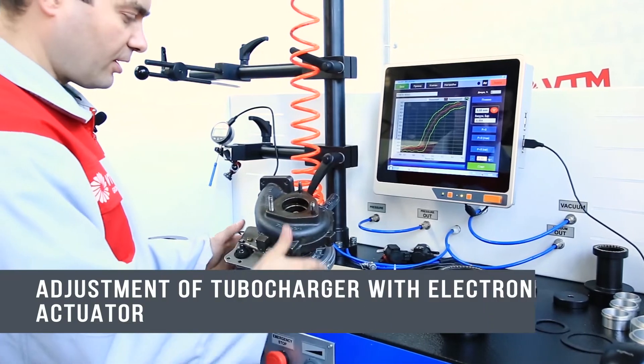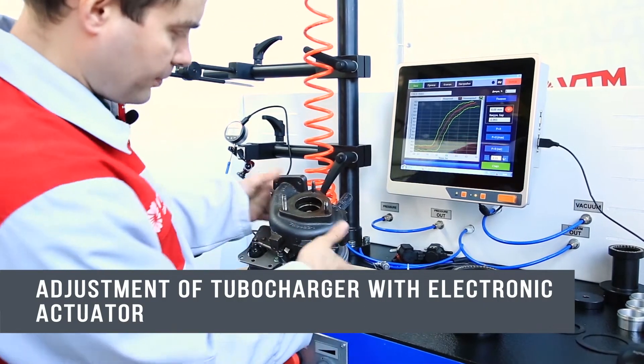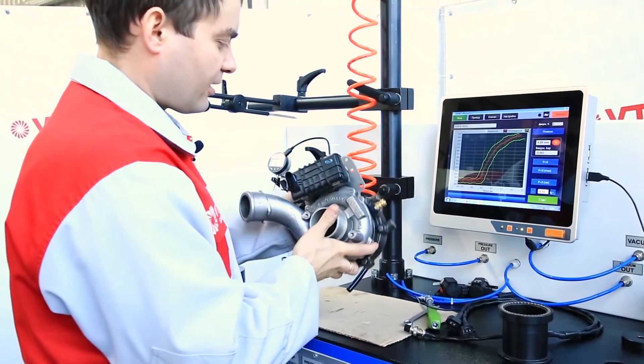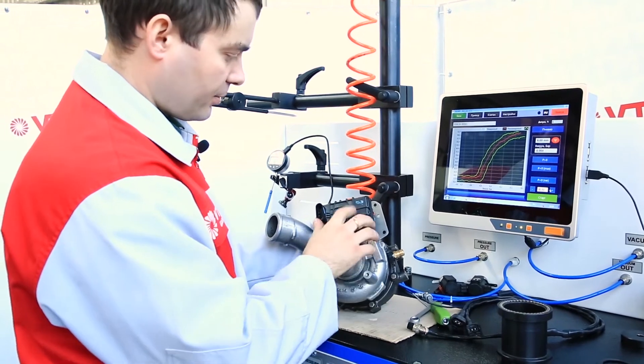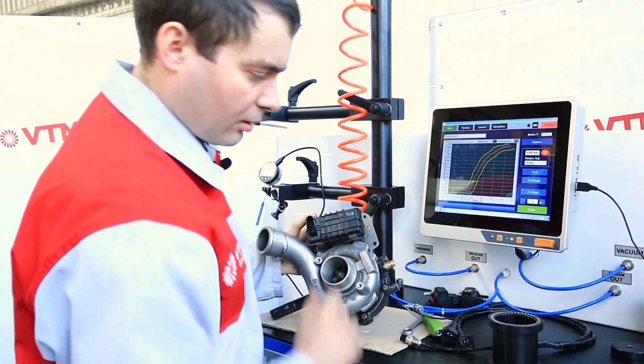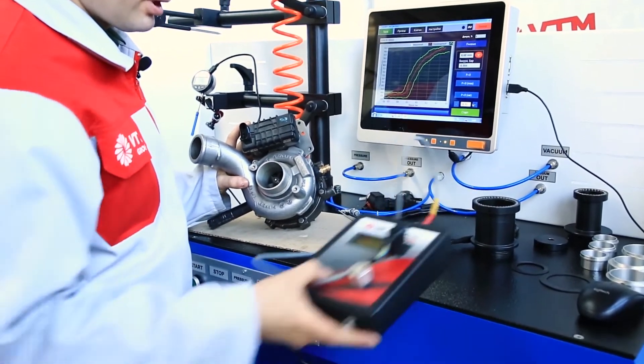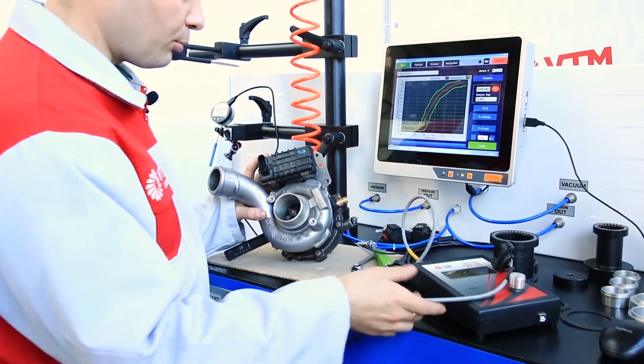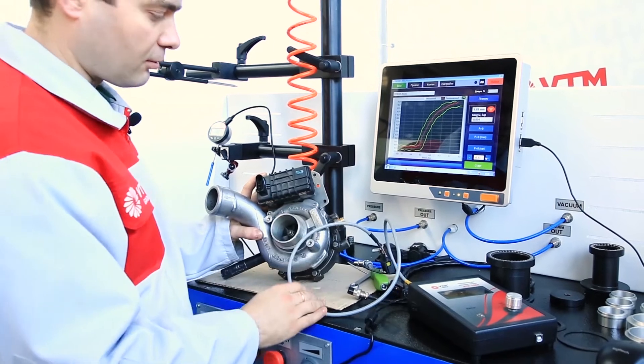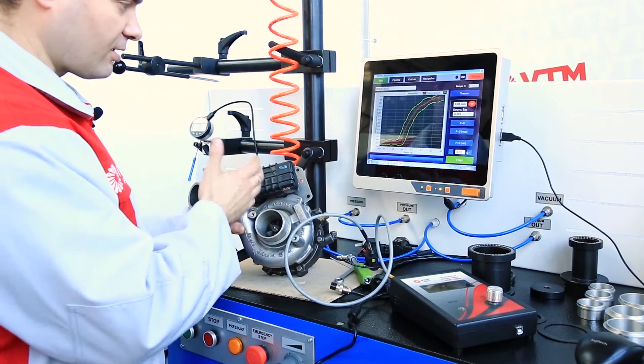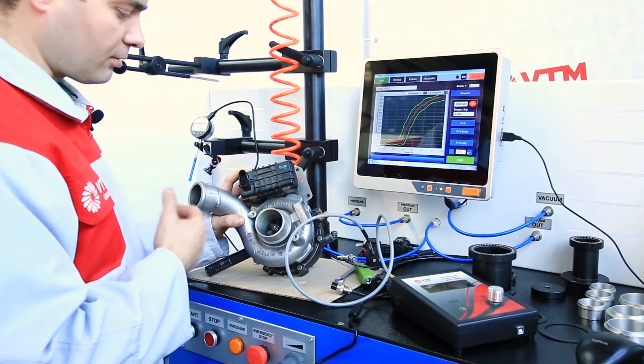On our machine, it is possible to check turbines with an electronic actuator. To do this, it is enough to know the number of the electronic actuator. It is necessary to have an ATP thousand device that works together with the machine. A turbine with an electric actuator can be fully configured on this machine only with the appropriate device.